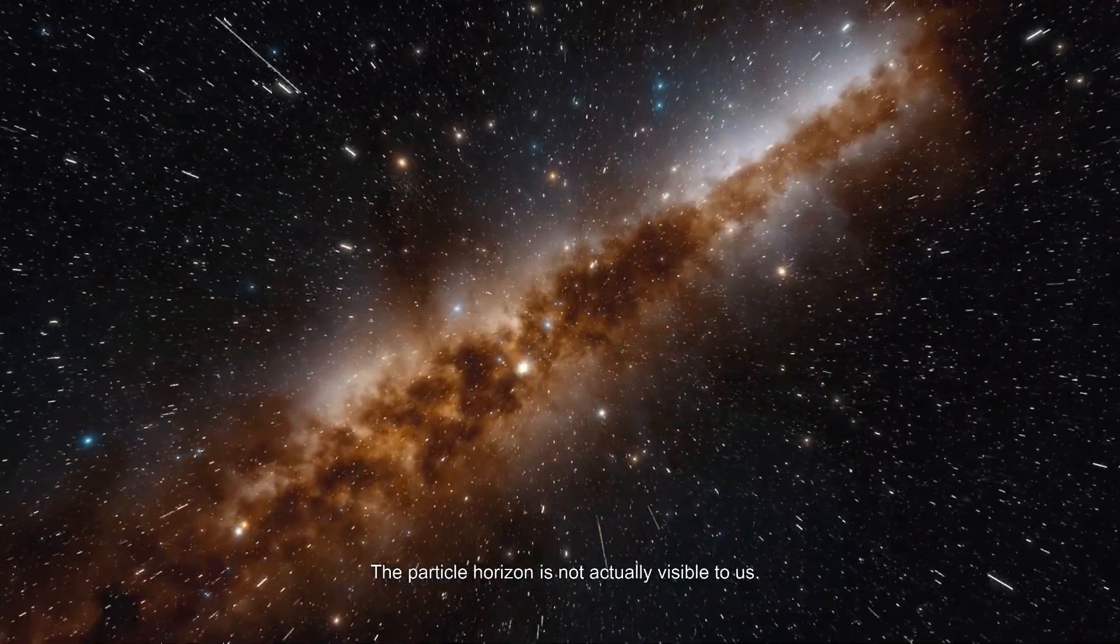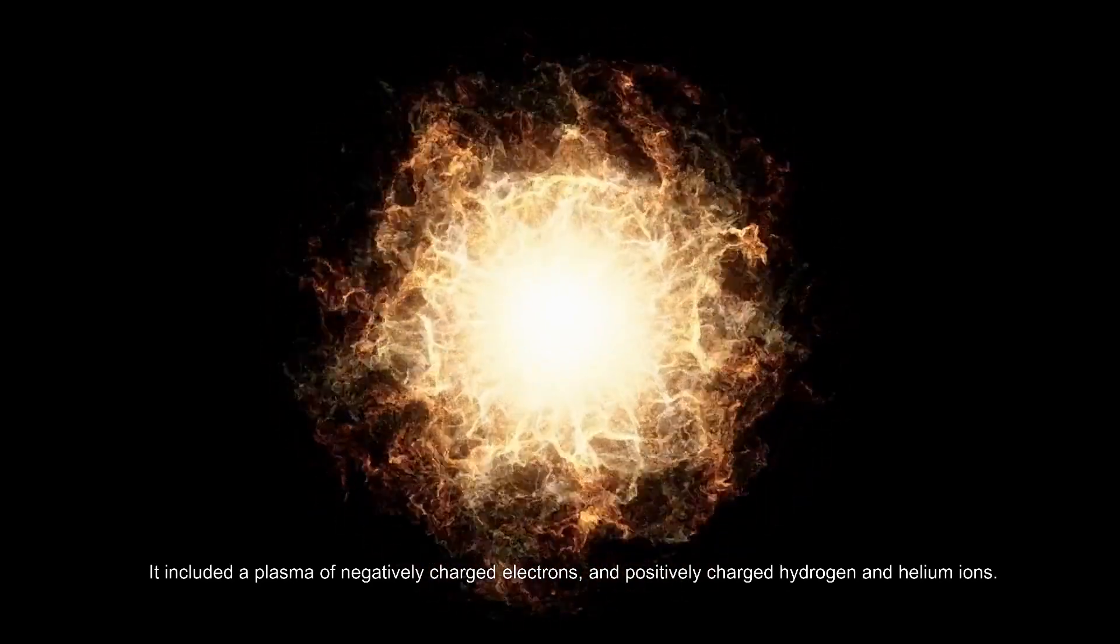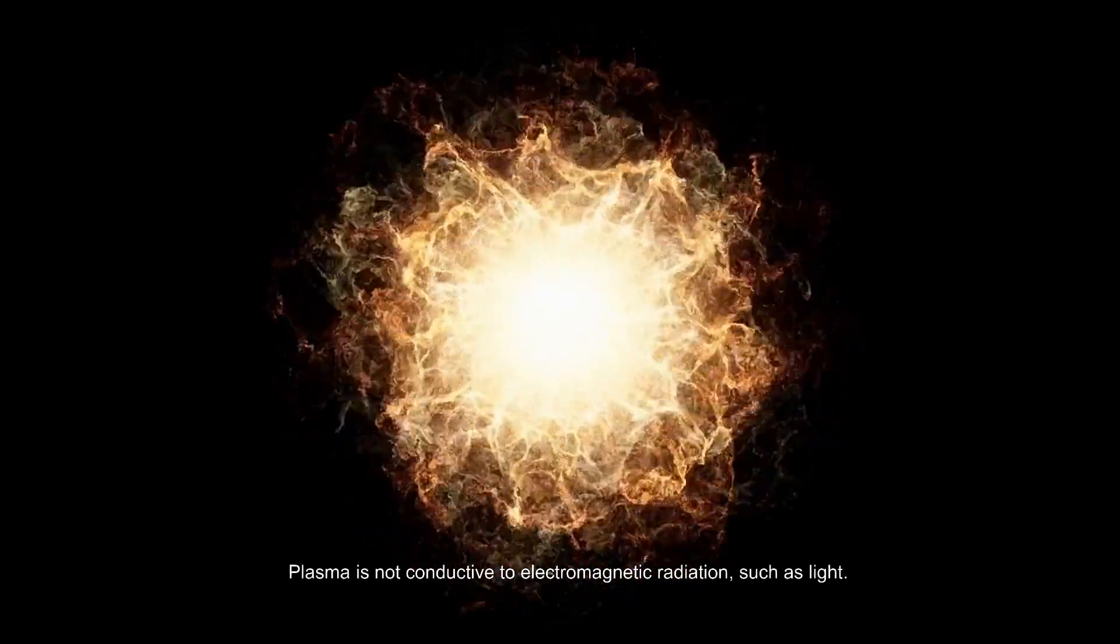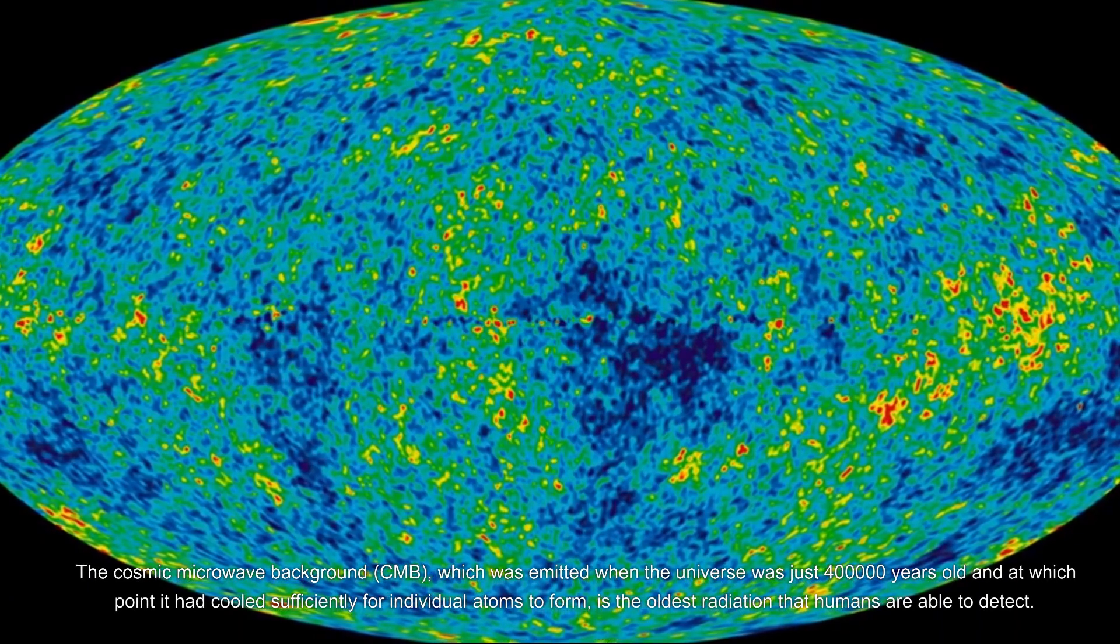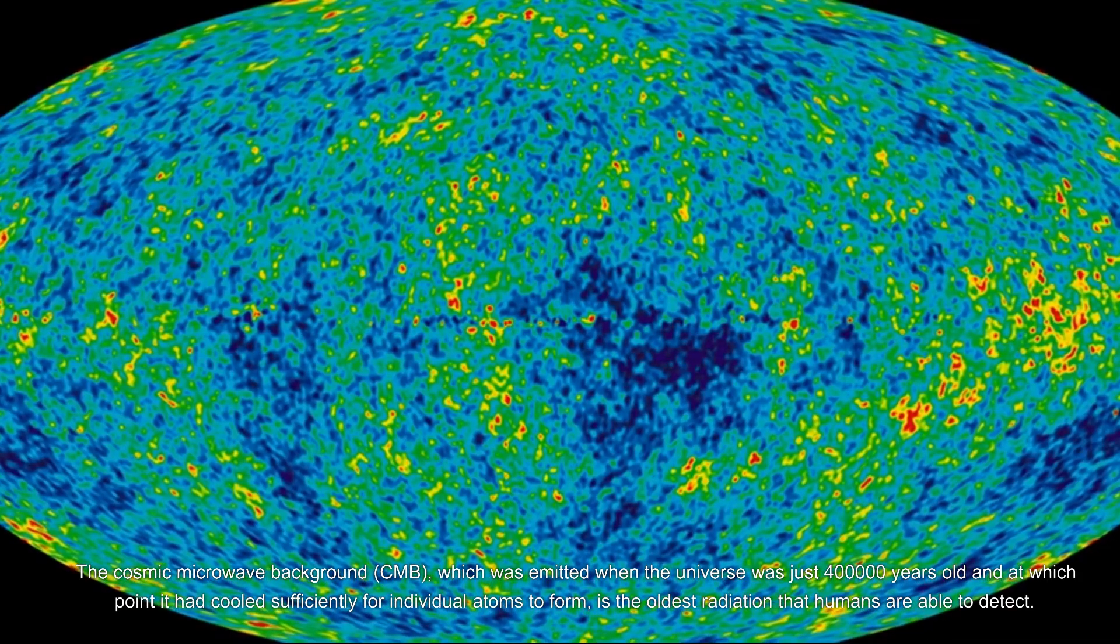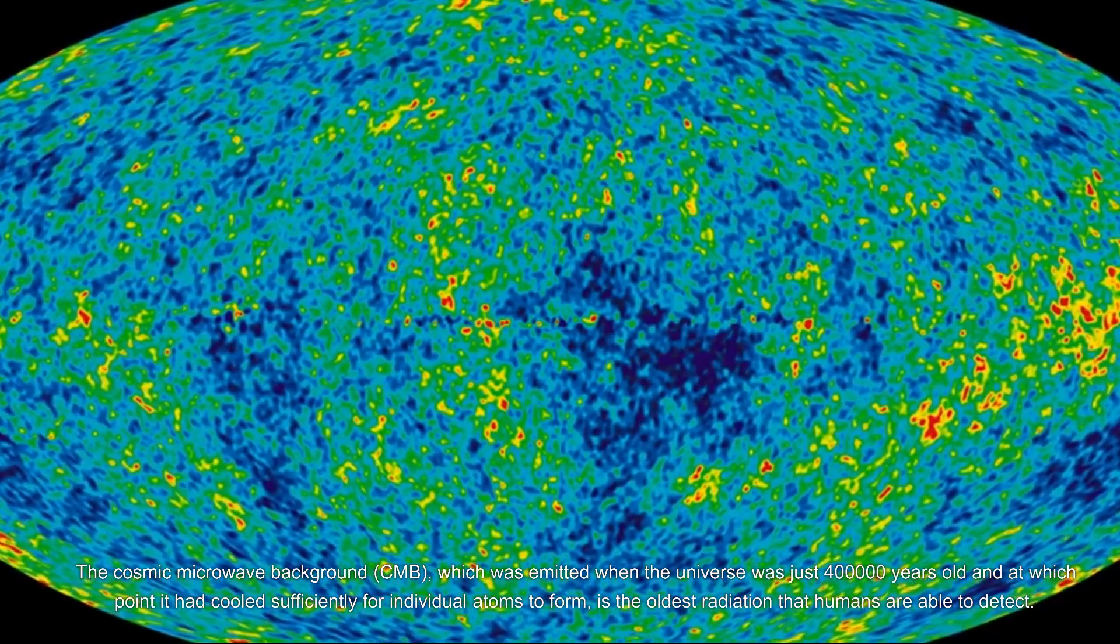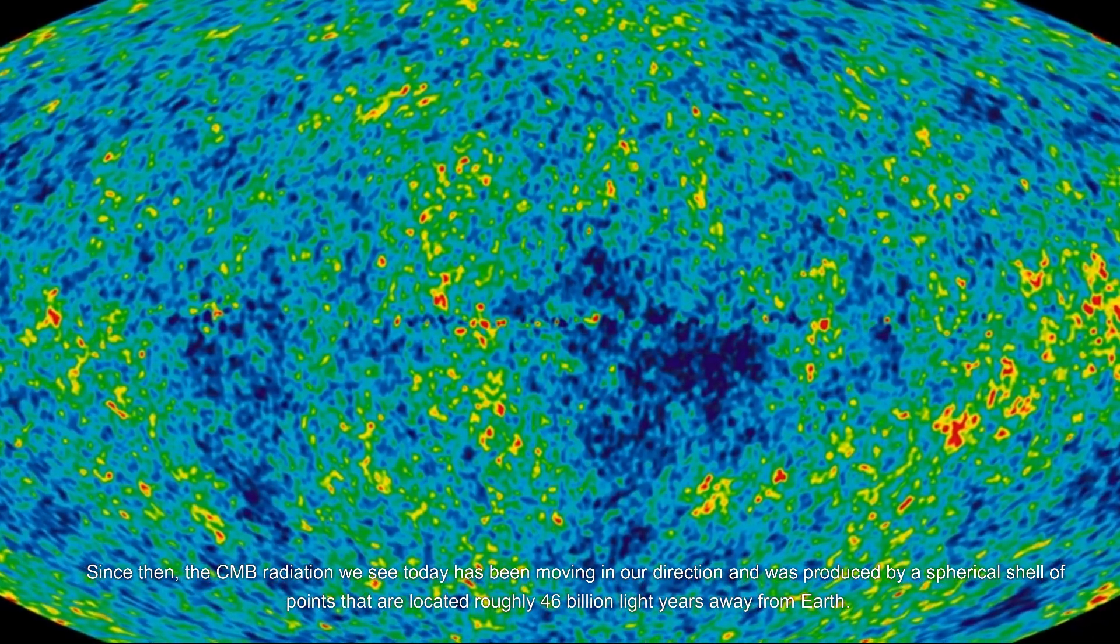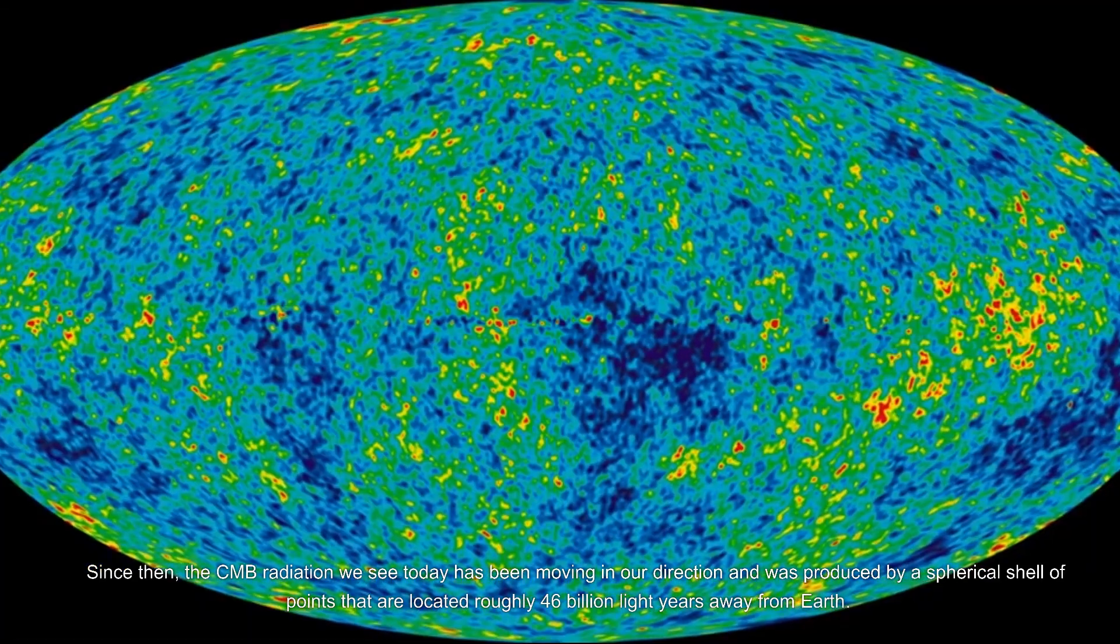The particle horizon is not actually visible to us. It included a plasma of negatively charged electrons and positively charged hydrogen and helium ions. Plasma is not conductive to electromagnetic radiation such as light. The cosmic microwave background, CMB, which was emitted when the universe was just 400,000 years old and at which point it had cooled sufficiently for individual atoms to form, is the oldest radiation that humans are able to detect. Since then, the CMB radiation we see today has been moving in our direction and was produced by a spherical shell of points that are located roughly 46 billion light years away from Earth.